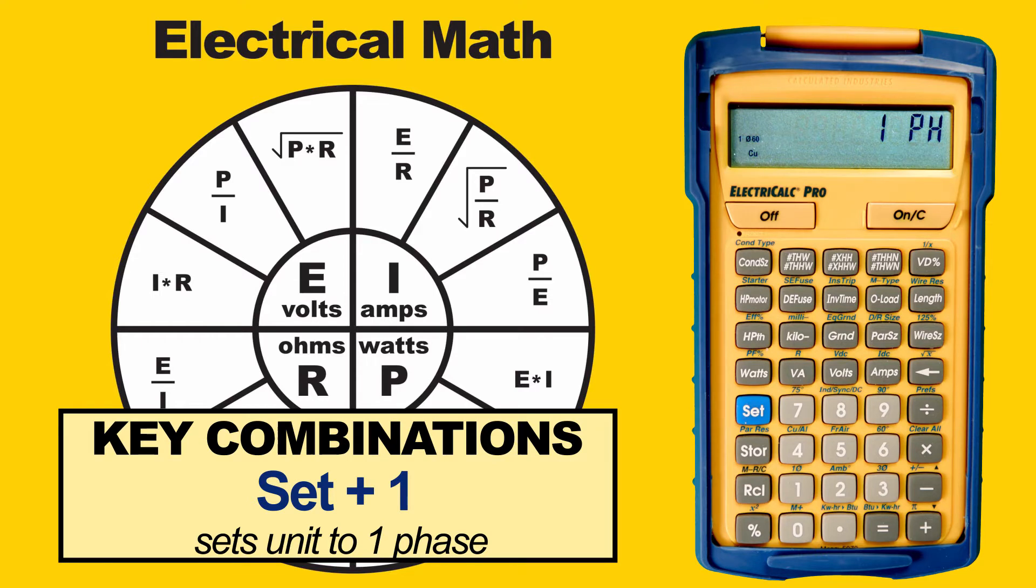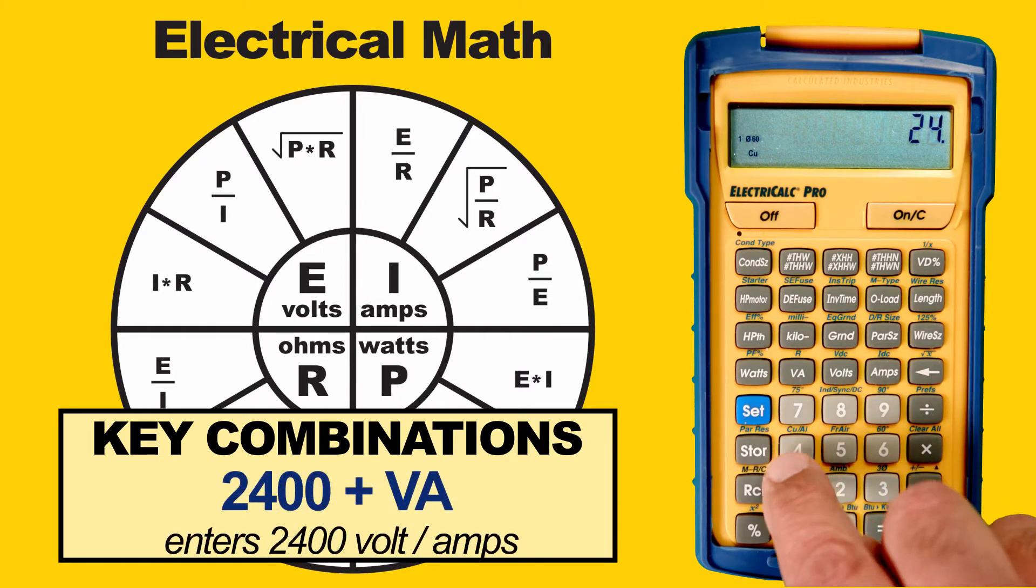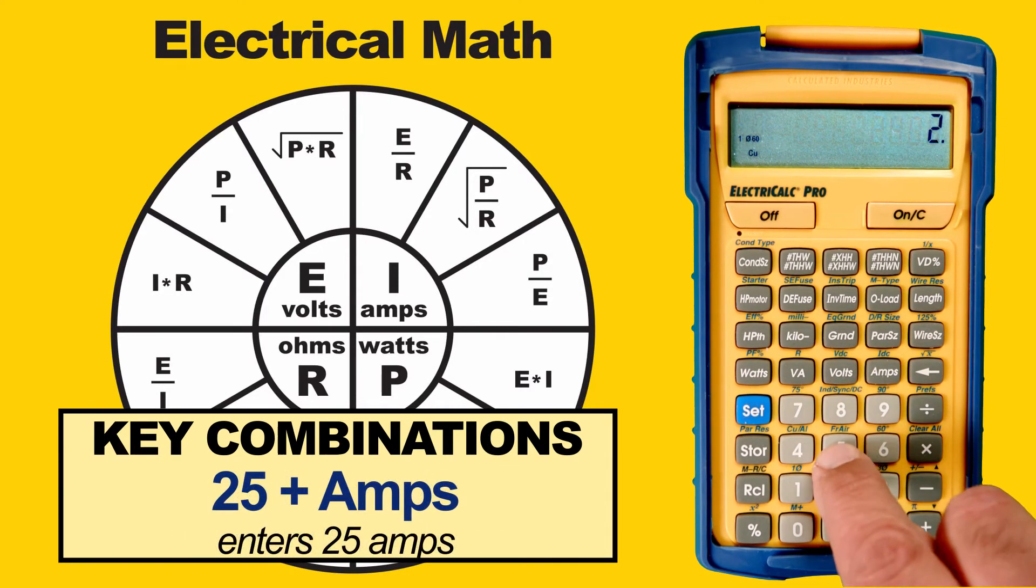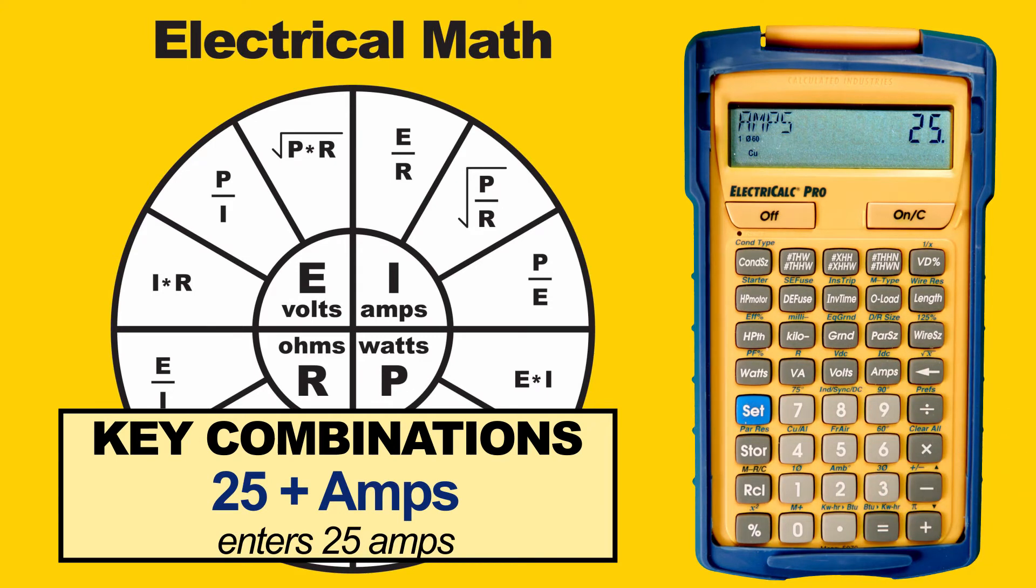We know the Volt Amps are 2400 and the Amps are 25. Enter 2400, then press the VA key for Volt Amps, then enter 25 and press the Amps key. To solve for volts, press the Volts key and we see our result, which is 96 volts.